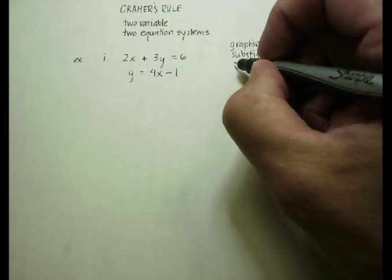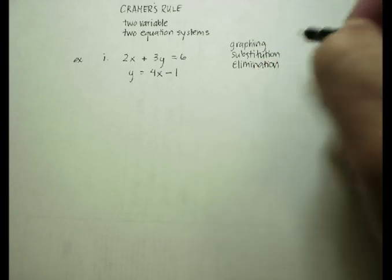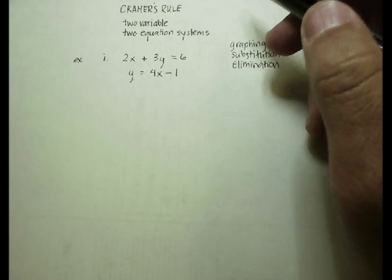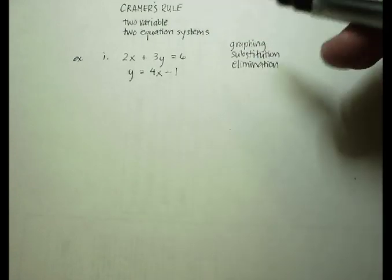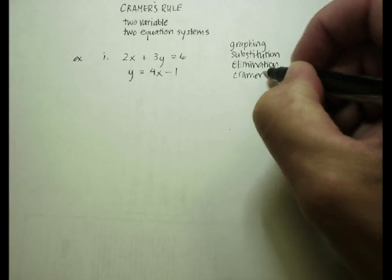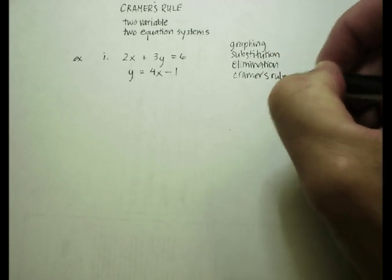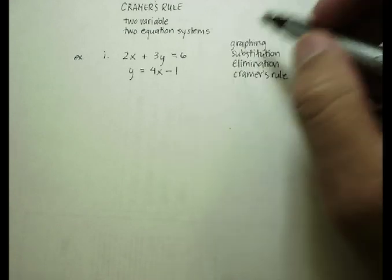Or I could use the elimination method, which is where you line things up, etc., and we can go over that in another video. But Cramer's rule is like a fourth way of solving this, and it's actually kind of fun. It's not used too often anymore, but it can be one of the easier ways of solving a system.